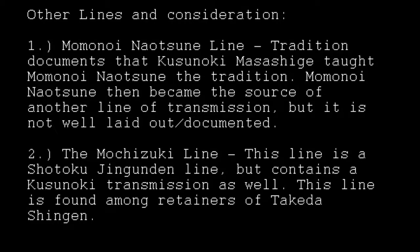Regarding other lines in consideration: the tradition documents that Masashige taught Momonoi Naotsune, who then became the source of another line of transmission — though that line is not well documented. The Mochizuki line, mentioned earlier, is a line of the Shotoku Jengundin that also contains the Kusunoki transmission through the Onchi and Wada. This line is found among retainers of Takeda Shingen — whenever you think about Takeda Shingen's retainers having Kusunoki traditions, it comes through the Onchi, the Wada, and specifically the Mochizuki line.